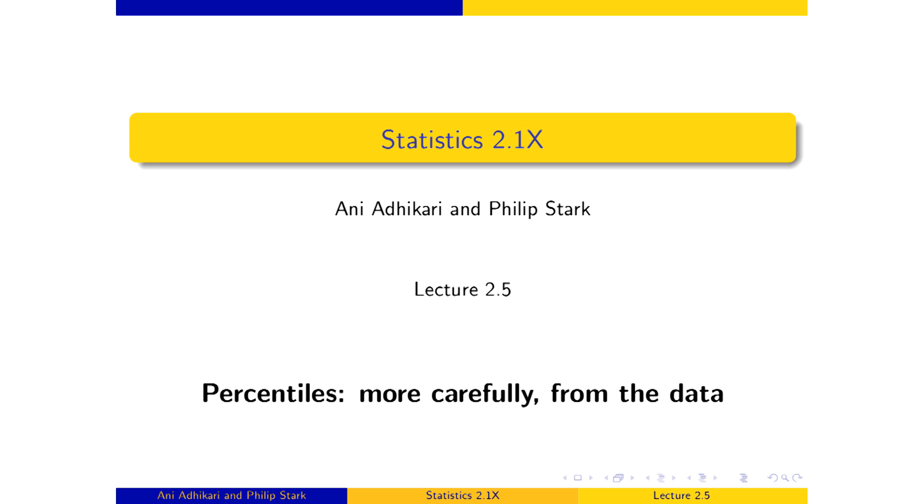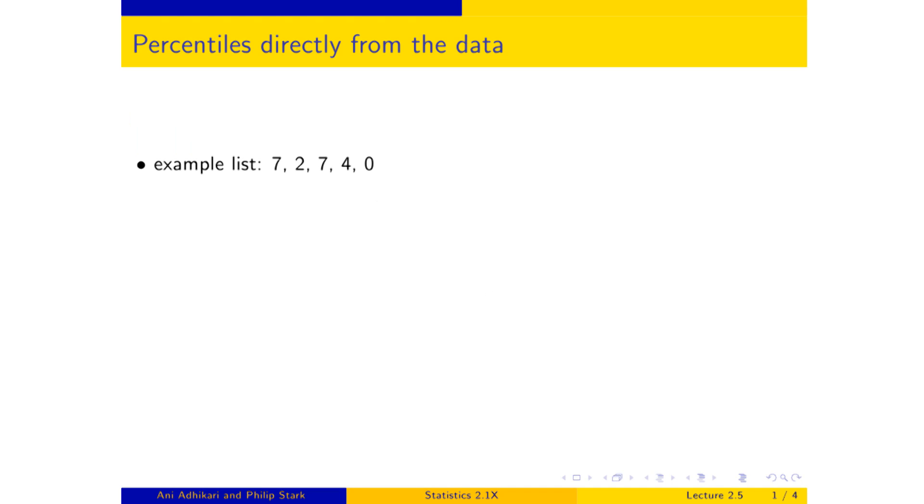What we're going to do now is take a look at a little tiny example list and work out some percentiles. If I want to find out how this list is distributed, step one, always please, arrange in increasing order. And once you've got it in increasing order, then something's become rather easy.